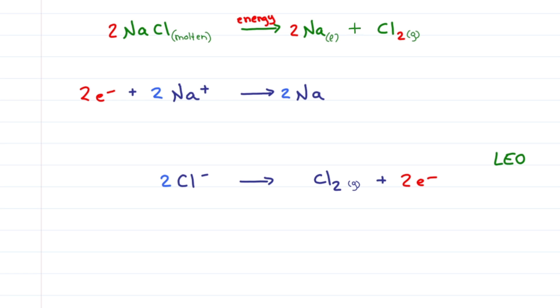Remember Leo the lion? If Leo is loss of electrons oxidation, chloride gets oxidized and grrr! Remember, gain of electrons reduction, sodium got reduced. Chlorine gives up two electrons that are taken up by the sodium ions.